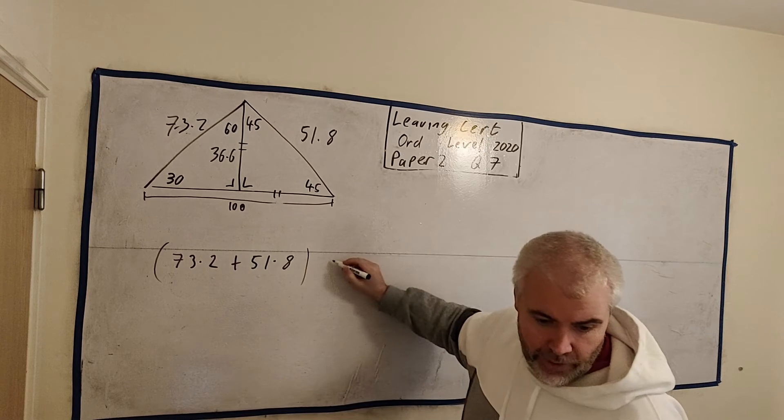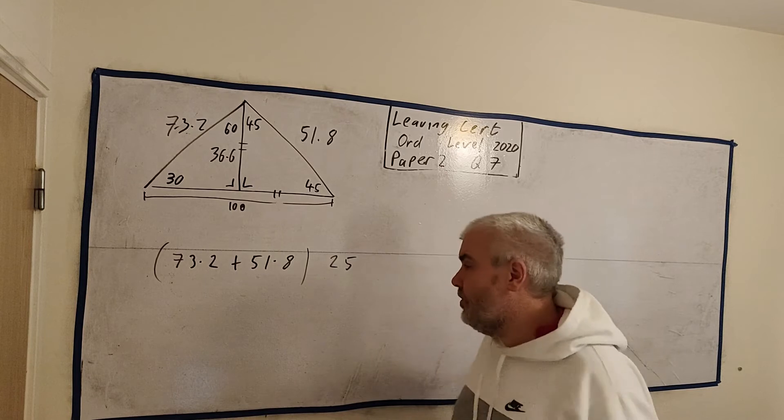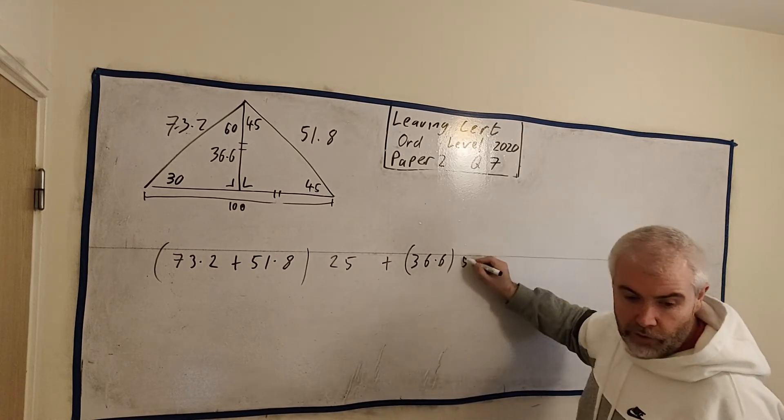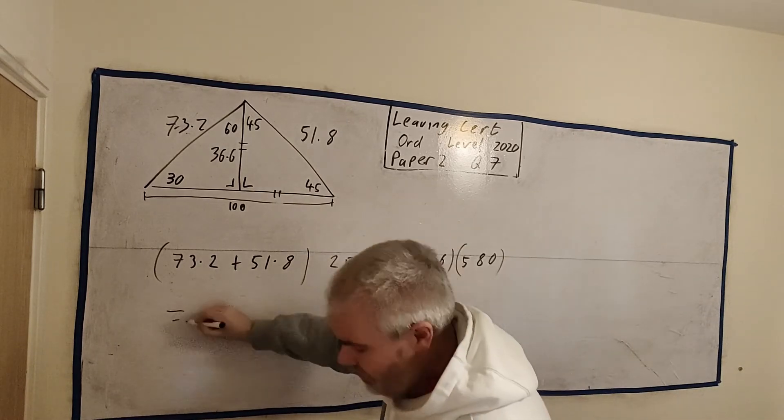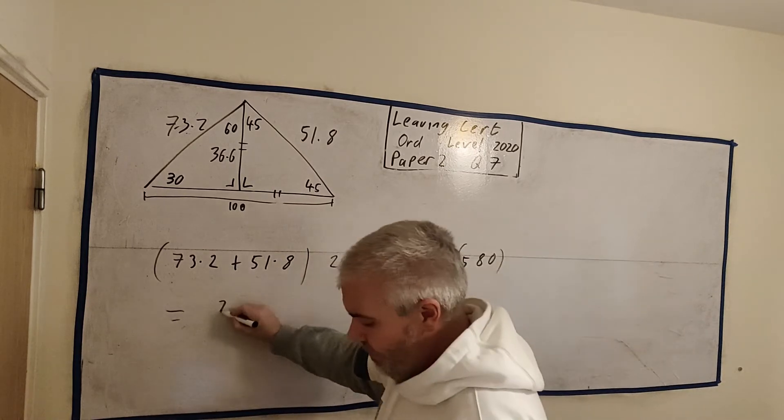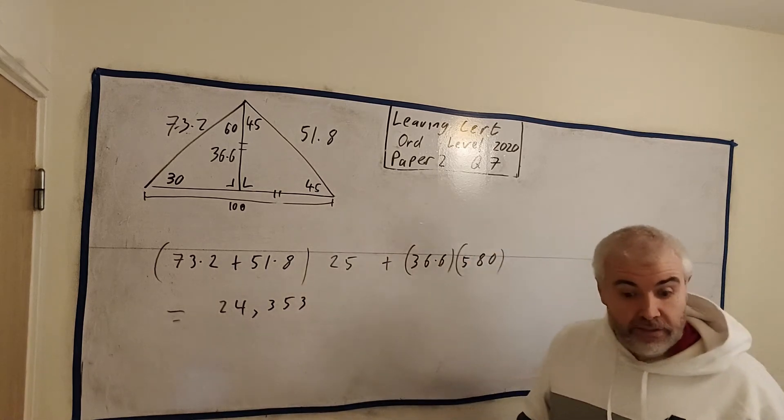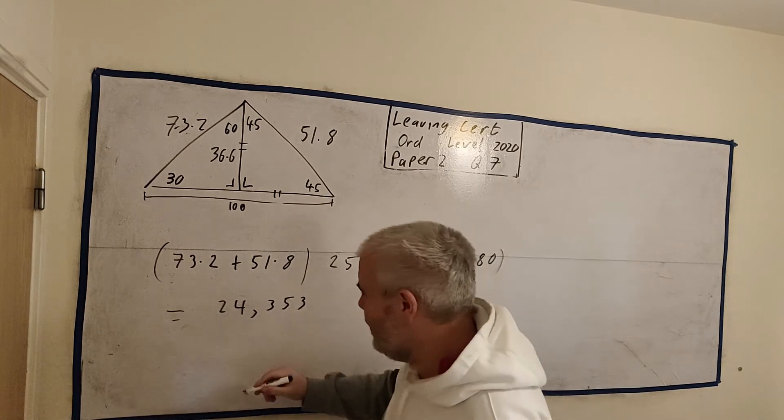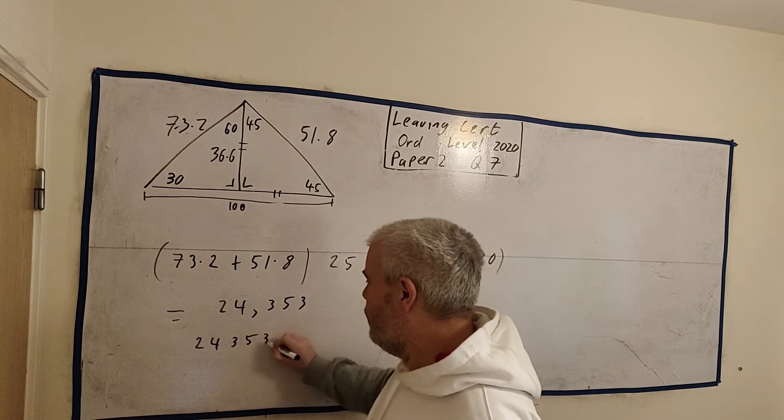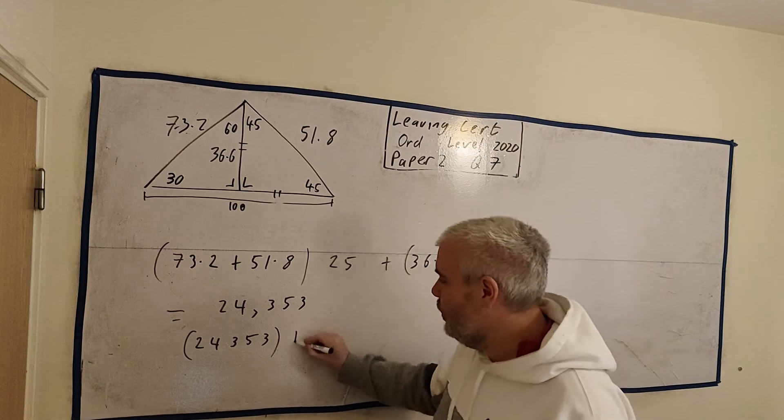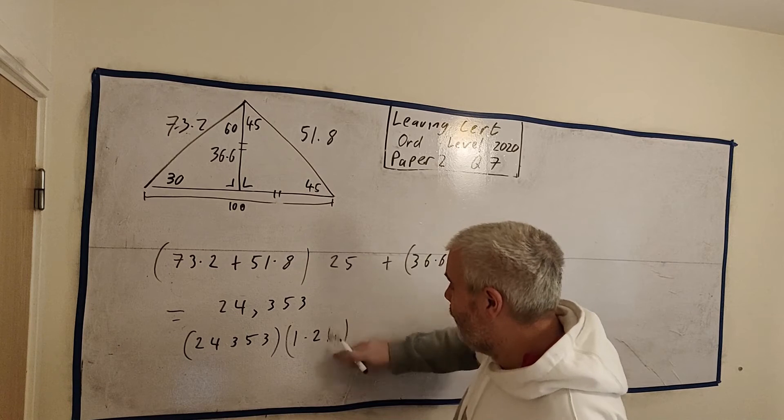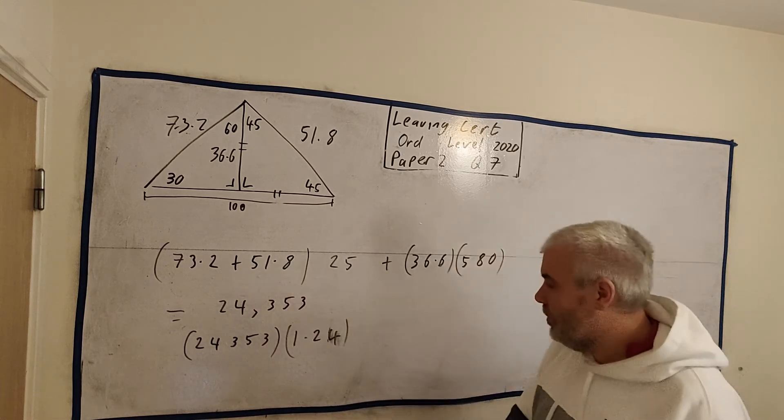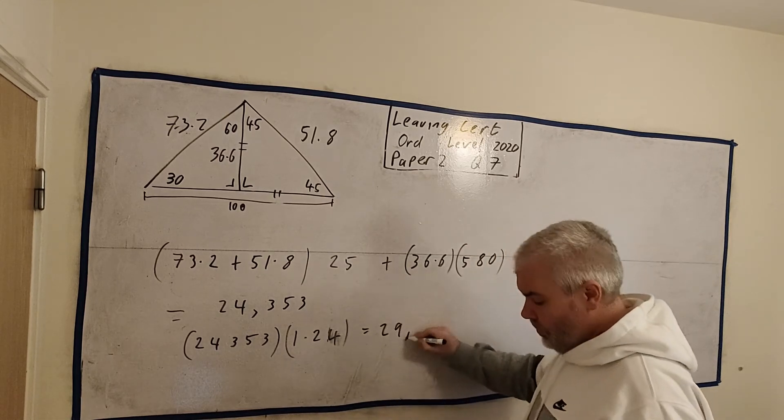73.2 plus 51.8. However, whatever that is equal to, it comes out quite evenly, I believe, 125. But whatever that's equal to, we're just going to multiply it by 25. Because it's 25 euros for every one of these meters. And then we're going to add on the length of the pole, 36.6. And for every one of those meters, we're going to multiply it by 580. Put all that into a calculator, and it will give us the answer 24,353 euro. That's how much this all costs before tax.